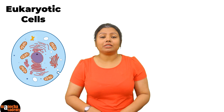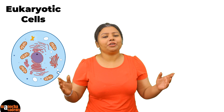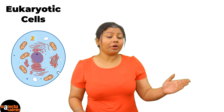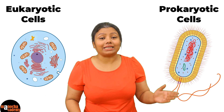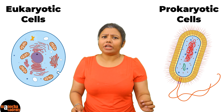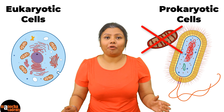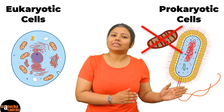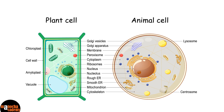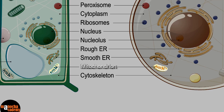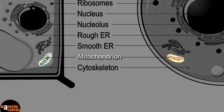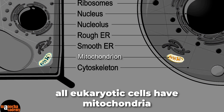Mitochondria is a cell organelle that is present in all eukaryotic cells. Prokaryotic cells like bacteria are devoid of double membrane-bound cell organelles, and therefore mitochondria is absent in them. It is present in plant cells, animal cells, and all different types of eukaryotes that you see around you.